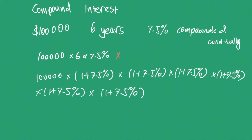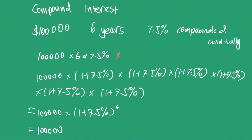We can simplify this as one hundred thousand times one plus 7.5% to the power of six, which equals one hundred thousand dollars times 1.075 to the power of six. Then we simplify it.